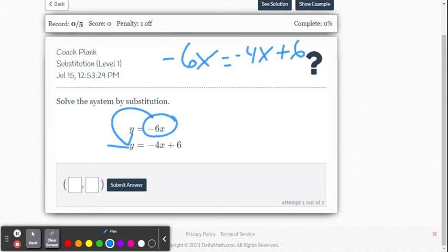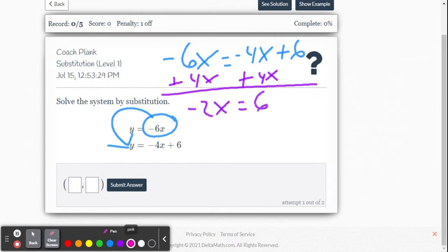So now we're going to solve this. We're going to add 4x to both sides, plus 4x plus 4x. So we have negative 2x equals 6. Now we're going to divide both sides by negative 2 so that we can get positive 1x, division property of equality.